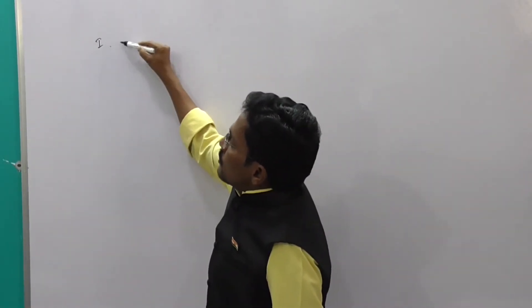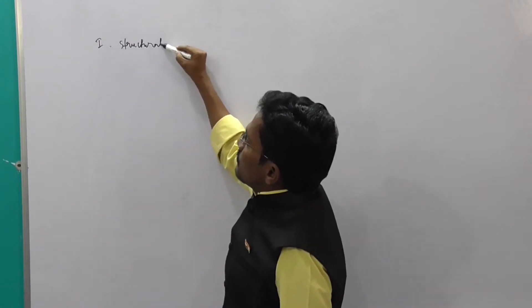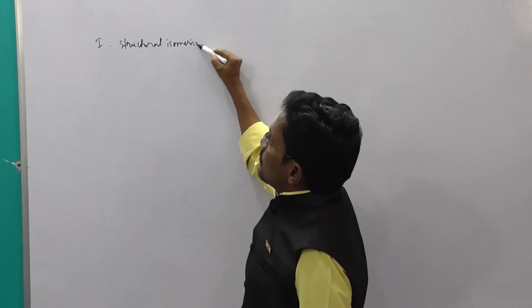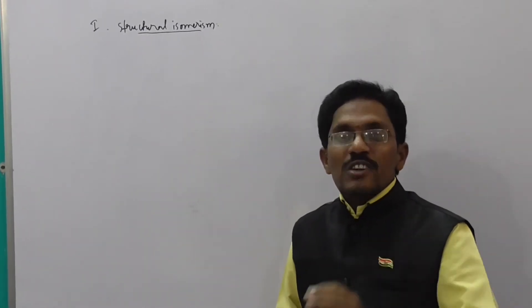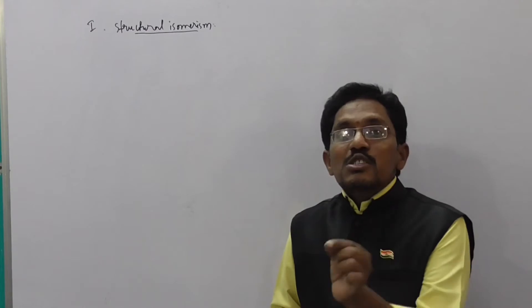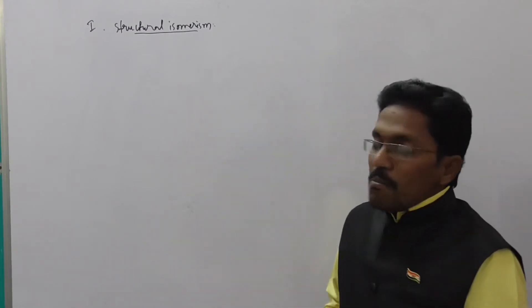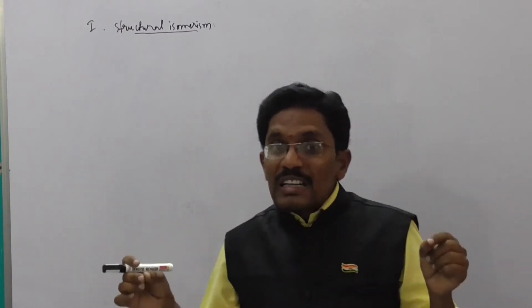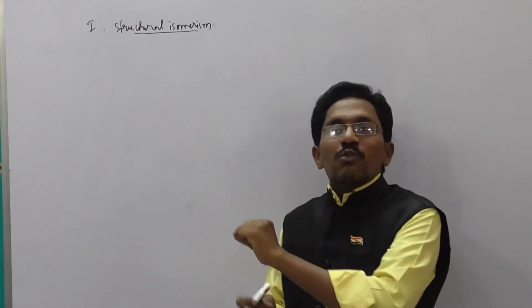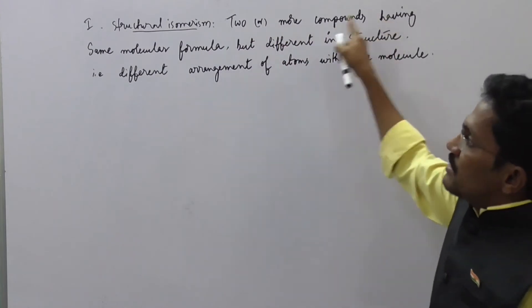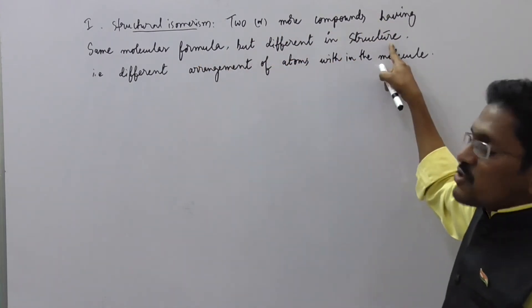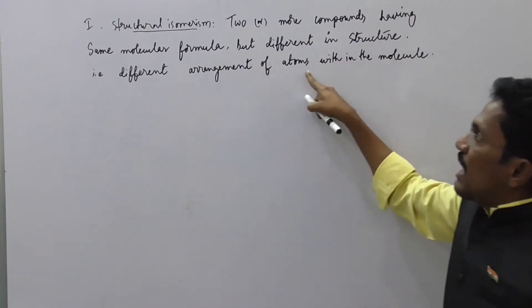Let us start structural isomerism. Structural isomerism is the isomerism which exists in two or more compounds having the same molecular formula but different in structure — that means the arrangement of atoms within the molecule is different. Two or more compounds having the same molecular formula but different arrangement of atoms within the molecule.